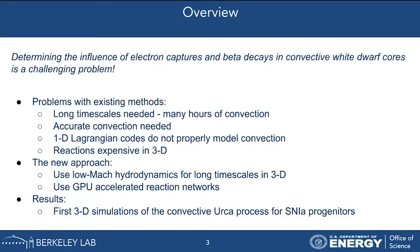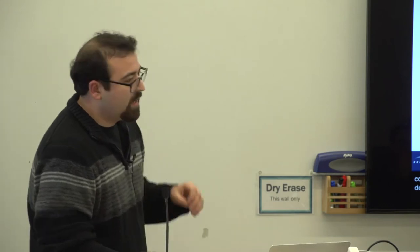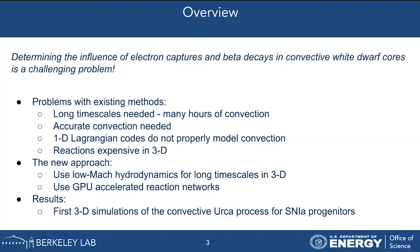I'm going to focus on the role of electron captures and beta decays in convection leading up to this explosion. There are problems with existing methods used to study this in the past: you need to simulate very long timescales because convection takes place over many hours, and you need lots of convective turnover times to really study this process. You also need to do realistic convection in 3D. Most of the time when people do these studies, they use 1D Lagrangian codes, and they can't really get the physics right.